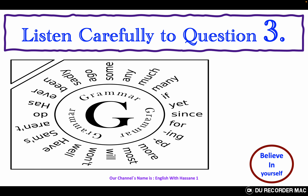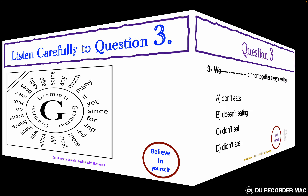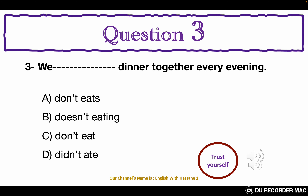Listen carefully to question 3. All the questions of this grammar test are in the present simple negative. Choose the best answer A, B, C, or D. We ___ dinner together every evening. A. Don't eats. B. Doesn't eating. C. Don't eat. D. Didn't eat. Now you can give your answer.